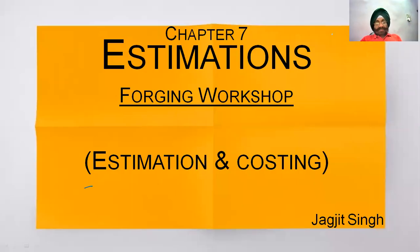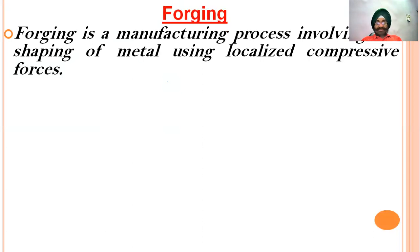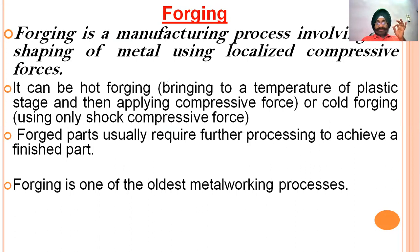Good morning students, today we are going to have a lecture on estimations to be made in a forging workshop. As we know, forging is something we prefer today for the manufacturing industry. Forging is a manufacturing process involving shaping of metal using localized compressive forces. It can be hot forging or cold forging. Hot forging is done at plastic stage temperature using compressive force.